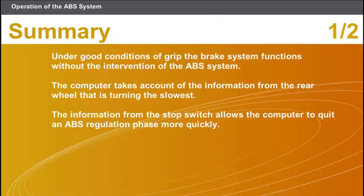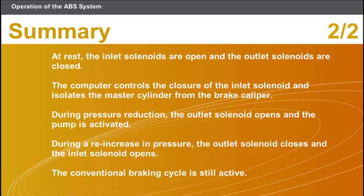In this section we covered the following points. Under good conditions of grip, the brake system functions without the intervention of the ABS system. The computer takes account of the information from the rear wheel that is turning the slowest. The information from the stop switch allows the computer to quit an ABS regulation phase more quickly. At rest, the inlet solenoids are open and the outlet solenoids are closed. The computer controls the closure of the inlet solenoid and isolates the master cylinder from the brake caliper. During pressure reduction, the outlet solenoid opens and the pump is activated. During a re-increase in pressure, the outlet solenoid closes and the inlet solenoid opens. The conventional braking cycle is still active.